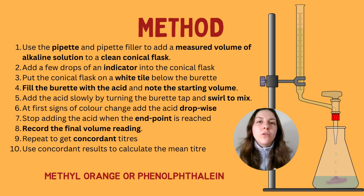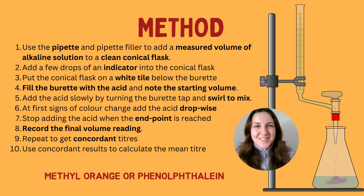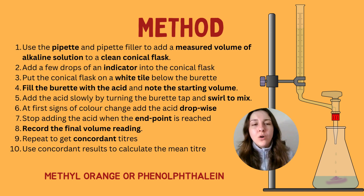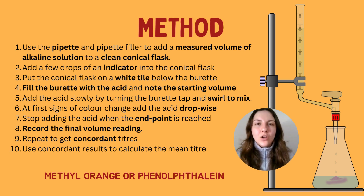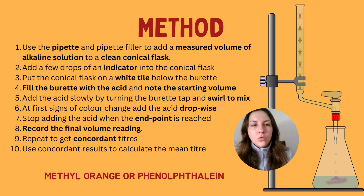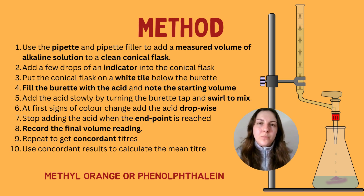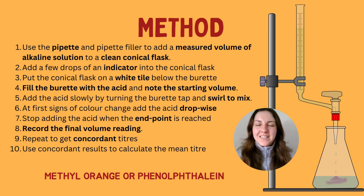Once you've reached the end point — indicated by the colour change — record the final volume and calculate the difference. This tells you the overall volume of acid needed to neutralise the alkali. Repeat the whole process until you get concordant results, which is when the volumes or titres are within 0.10 cm³ of each other. Use the concordant results to calculate a mean volume of acid needed.